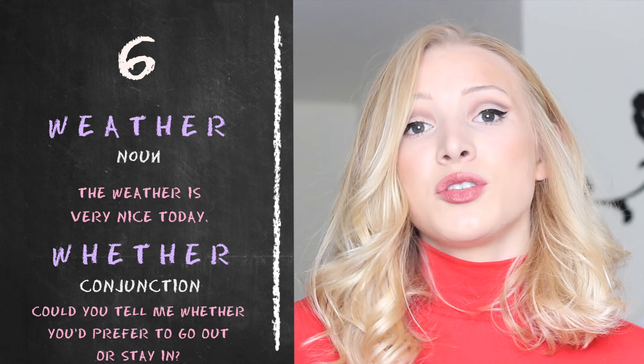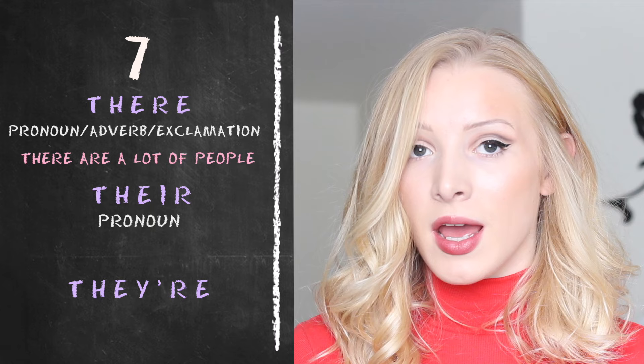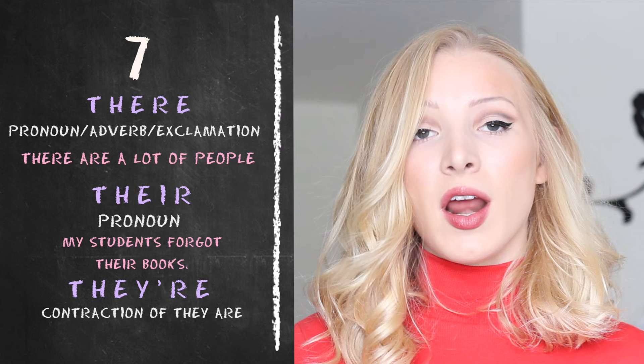Number seven: 'there,' 'their,' and 'they're.' 'There' can act as many different parts of speech — for example, as a pronoun: 'There are a lot of people.' Then we have 'their,' which is a possessive pronoun: 'My students forgot their books.' Finally, 'they're' is a contraction of 'they are' — 'They're very nice people,' meaning 'They are very nice people.'